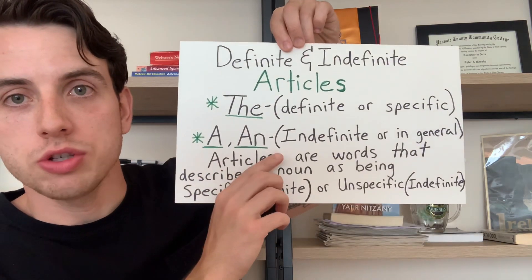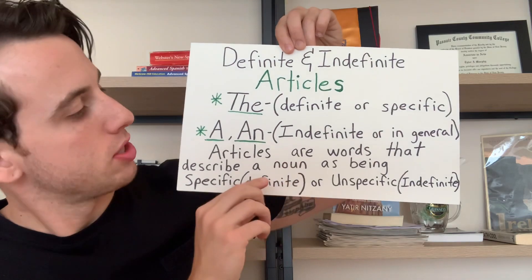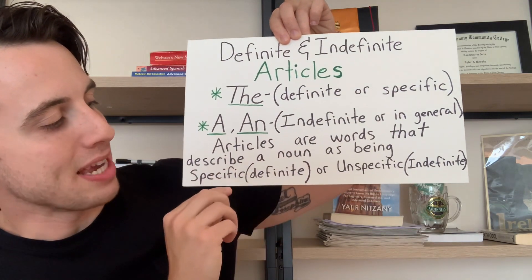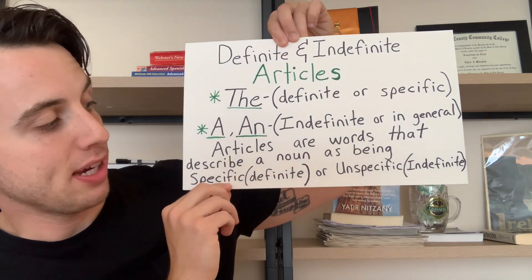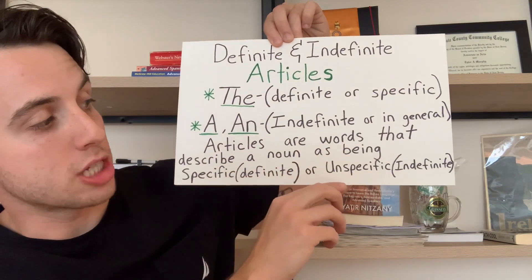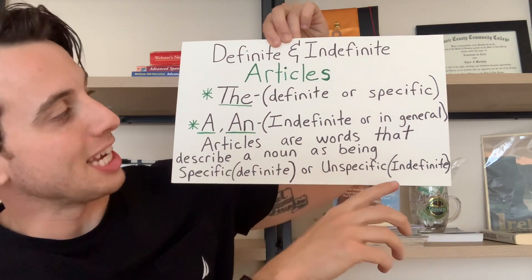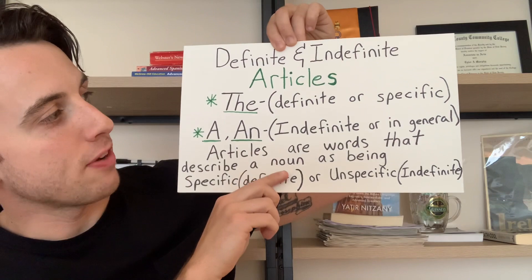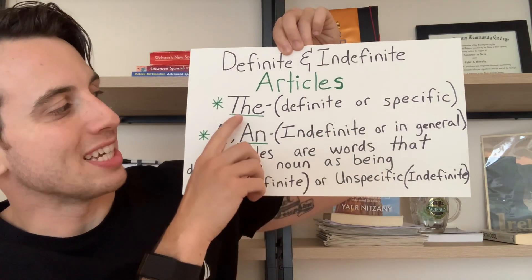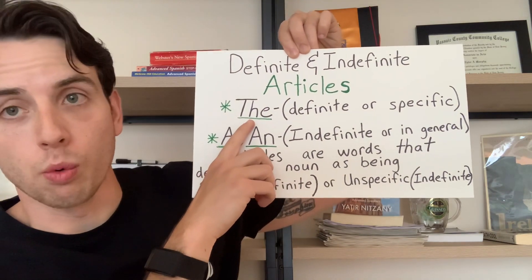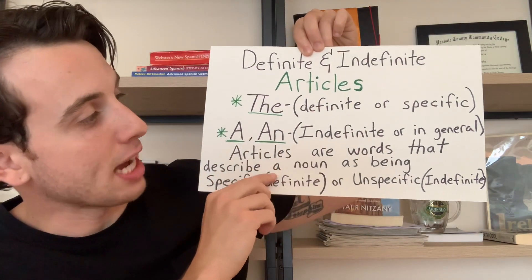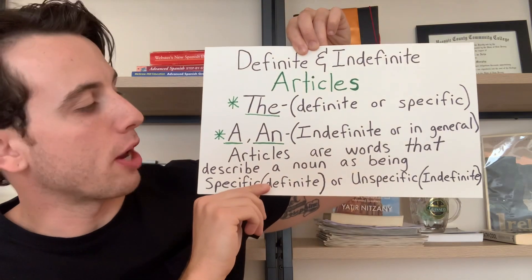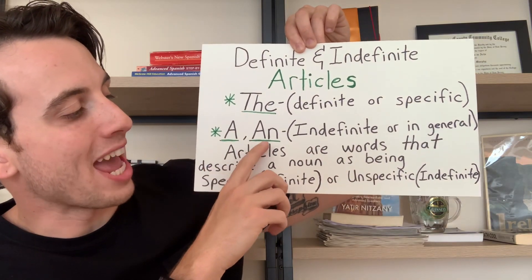Articles are words that describe a noun as being specific, or definite, or unspecific, or indefinite. The definite or specific article is 'the.' The indefinite, or when speaking in general, is 'a' or 'an.'